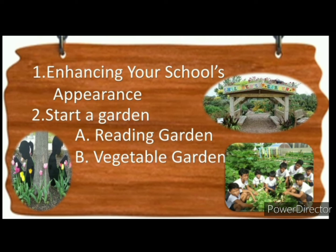Letter A — Reading garden: turn a courtyard or other outdoor space into an inviting area to read. Install benches and walkways, plant flowers, bushes, and flowering trees. Include grassy areas and shady trees where children can stretch out with a good book and begin a lifelong habit of reading for pleasure.